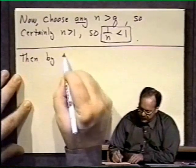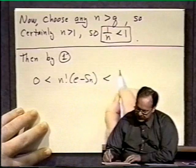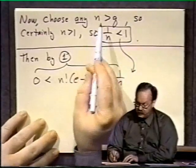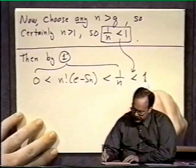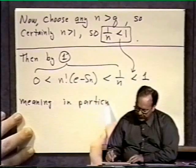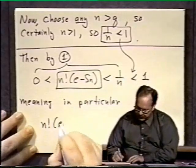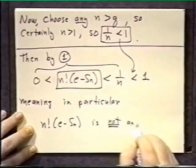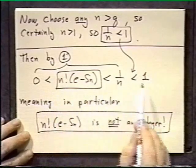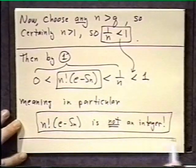Then, now we go back and we pick up 1. Then by 1, what do we have? We had 0 less than n factorial times that e minus s sub n, less than 1 over n. This is the part we get back from 1. Now, in this case, 1 over n is, by our choice of n, we could choose any n. We chose one bigger than q. We have 1 over n strictly less than 1. So, what does this mean? Meaning, in particular, okay, look what we have here. Here is this funny number, n factorial e minus s sub n. Meaning, in particular, that that number, n factorial e minus s sub n is not an integer. Okay? That is not an integer because what? It's because it's between 0 and 1. If it's between 0 and 1, there are no integers in there. So, whatever that number is, it's not an integer. Okay, good. We know that that number is not an integer.